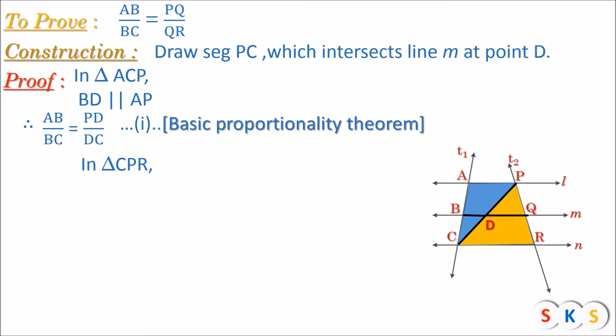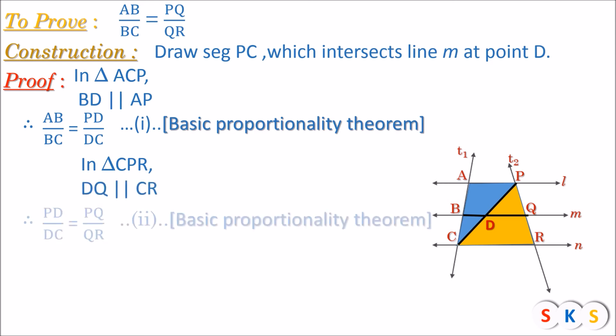Now we will take the other triangle. We will take triangle CPR. In this triangle, Seg DQ is parallel to Seg CR, since line M and line N are parallel to each other. So here we apply the Basic Proportionality Theorem and get PD upon DC equals PQ upon QR. We will consider this as equation number 2.